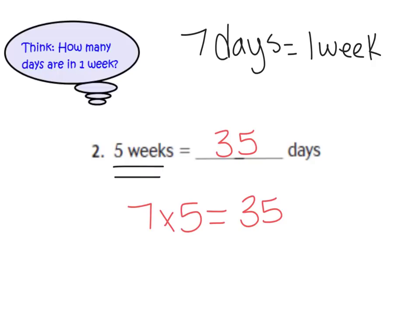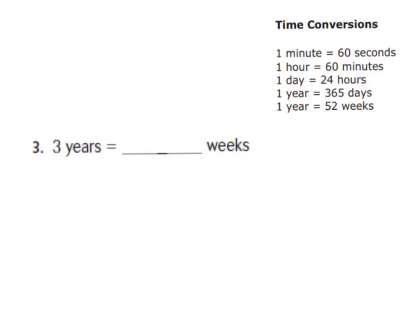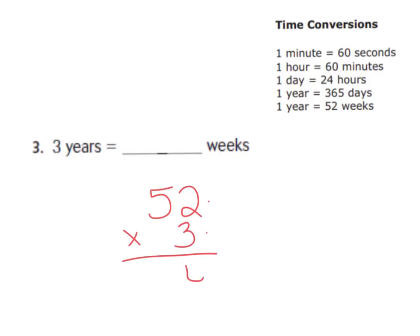This conversion of seven days in one week is not on our reference sheet, but that's something we need to make sure that we know. Now let's look at number three. Number three is wanting us to change three years all to weeks. Looking at our reference sheet at the time conversions, we can see that one year equals 52 weeks. But we have three of those years, so we need three of those 52s. We multiply 52 times three — two times three is six, and three times five is 15 — so there are 156 weeks in three years.